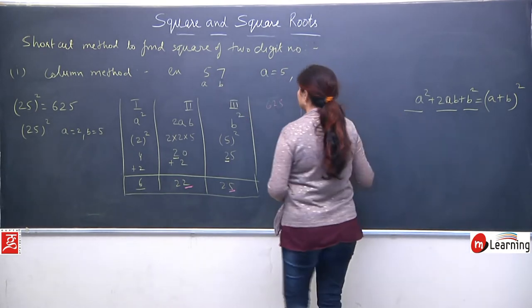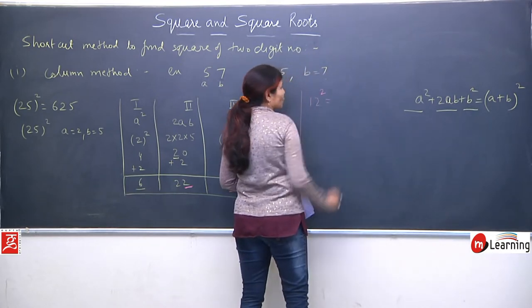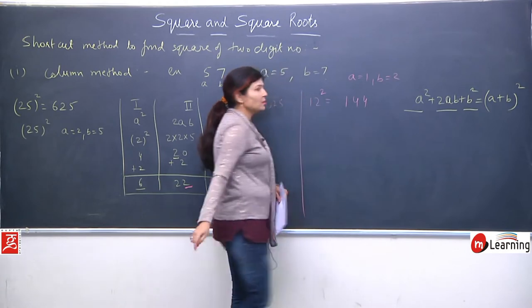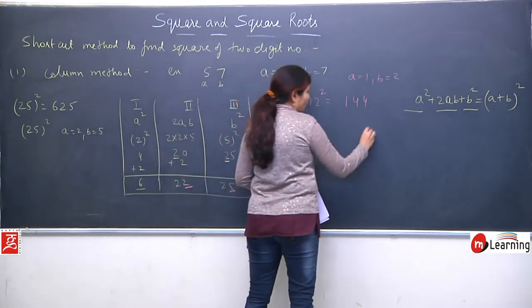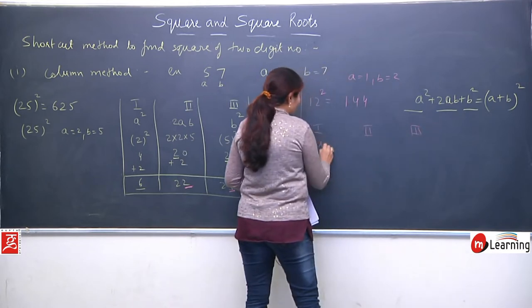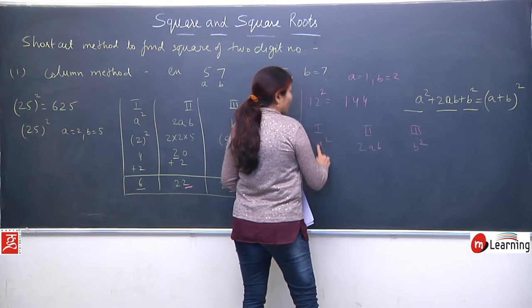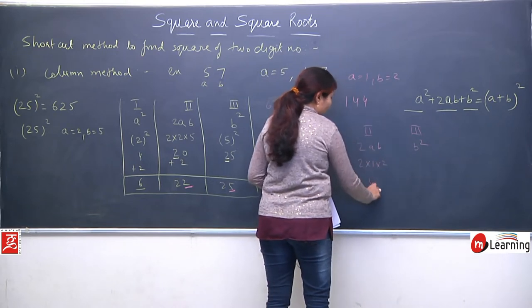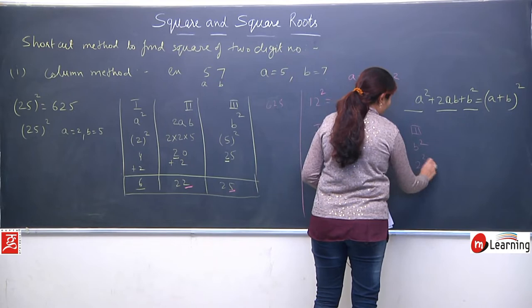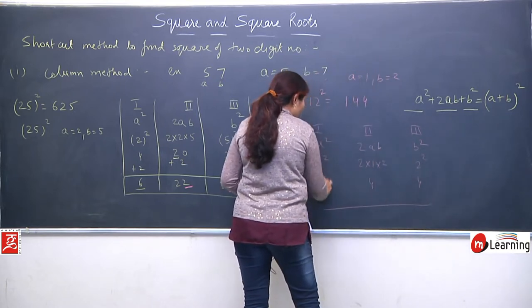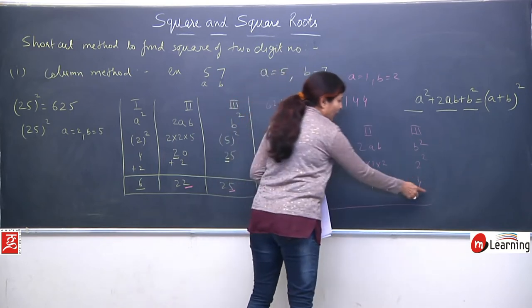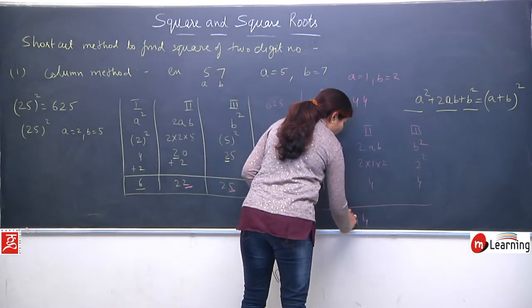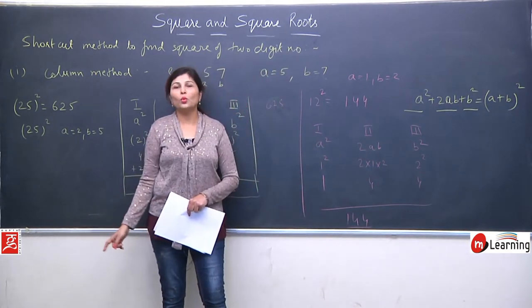Let's quickly take another easy example: 12². We know 12² = 144. Here a = 1 and b = 2. Columns: a² = 1, 2ab = 2×1×2 = 4, b² = 4. Here there are no 2-digit numbers appearing in any column, so no carry needs to be added. Your answer is 1, 4, 4 → 144. The square of 12 is always 144.